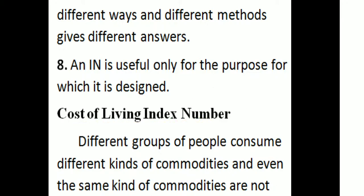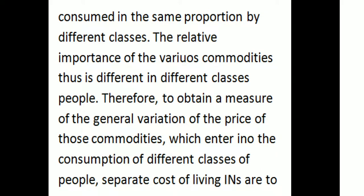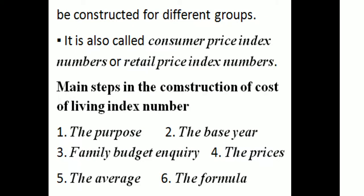Cost of living index number: different groups of people consume different kinds of commodities, and even the same commodities are not consumed in the same proportion by different classes. The relative importance of various commodities is different for different classes of people. Therefore, to obtain a measure of the general variation in price of commodities consumed by different classes, separate cost of living index numbers are constructed for different groups. It is also called consumer price index number or retail price index number.